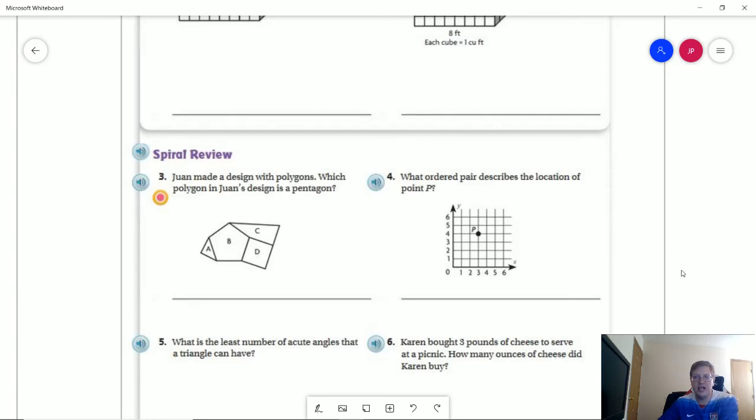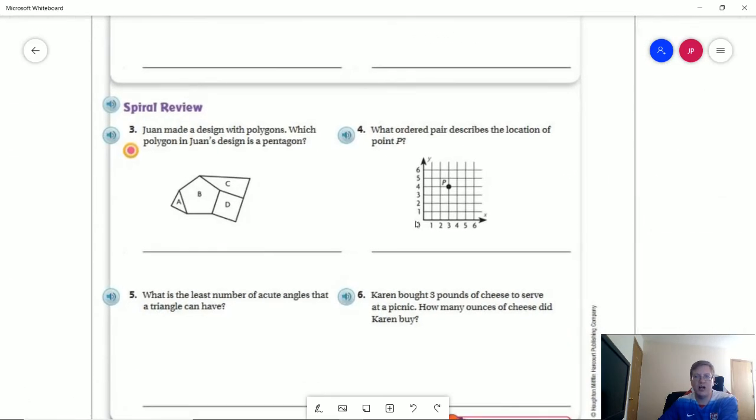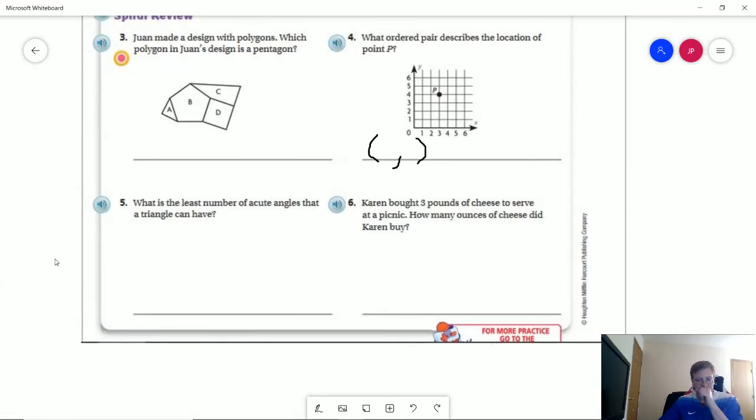For number four, our x value is always going to come first so you are always going to want to write an ordered pair that looks starting like this and then your value for x is going to go here, value for y is going to go here. The least number of acute angles that a triangle can have, think about that. We have different versions of triangles. So you can have a right triangle, we could have an obtuse triangle, and we could have an acute triangle. So think about what the smallest number of acute angles we could have for that.